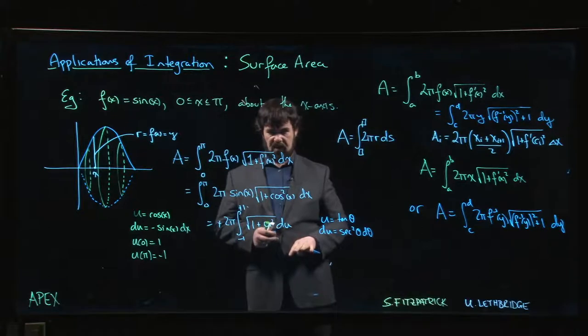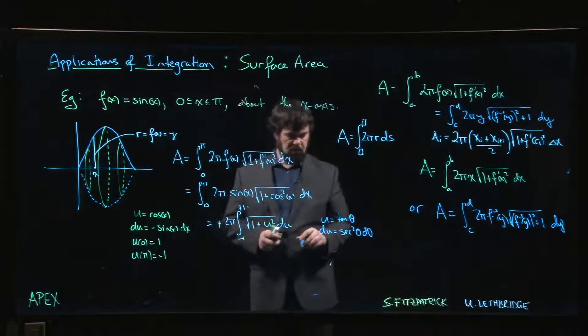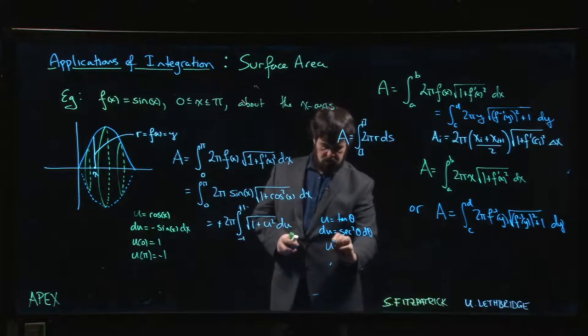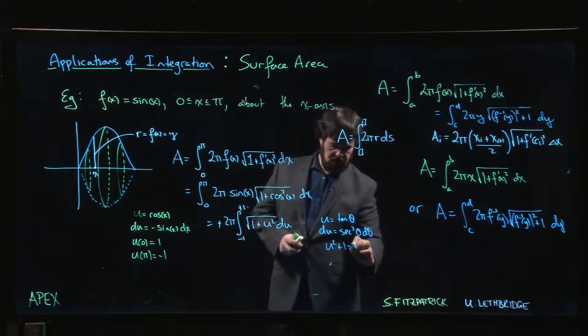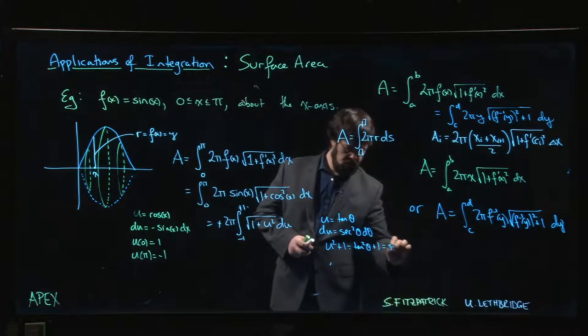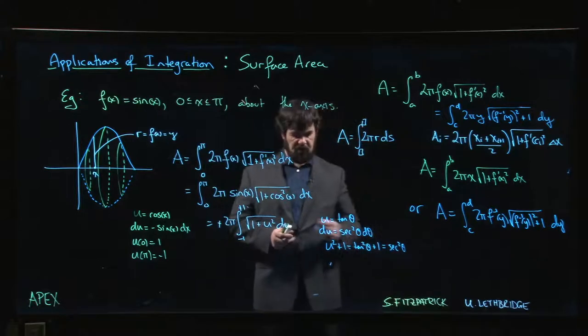Maybe you see where this is heading and you're not liking it. Let's go for it. Let's go for it anyway. u squared plus 1 becomes tan squared theta plus 1. That's secant squared theta, so the square root is going to be secant.